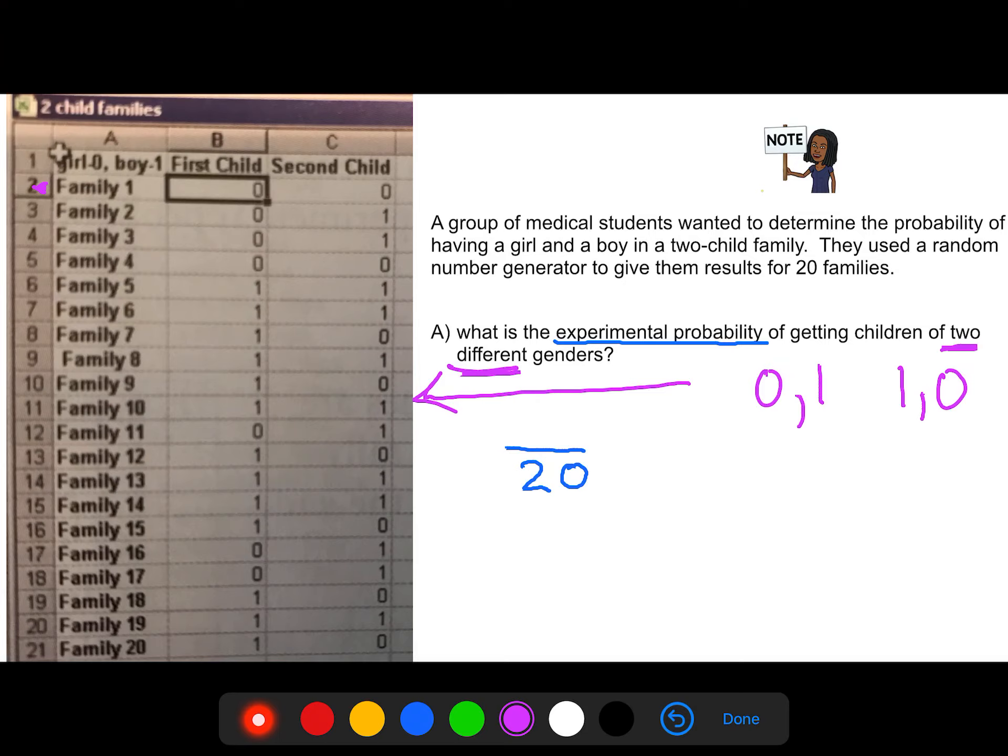Family number one, that doesn't have two different. How about family number two? Yes, family two had two different. Family three, two different. Family four, nope, both the same. So you just continue on. You can even pause it and continue on for yourself to see how many you get.